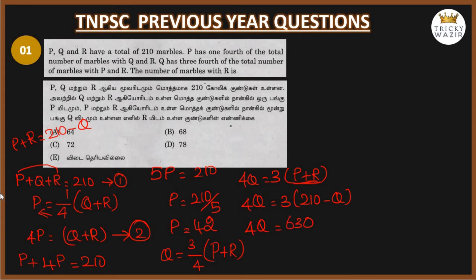4Q equals 630 minus 3Q. This minus 3Q becomes plus 3Q on the other side. 4Q plus 3Q equals 630. So 7Q equals 630. Q equals 630 divided by 7, which cancels to 90. Q value is 90.